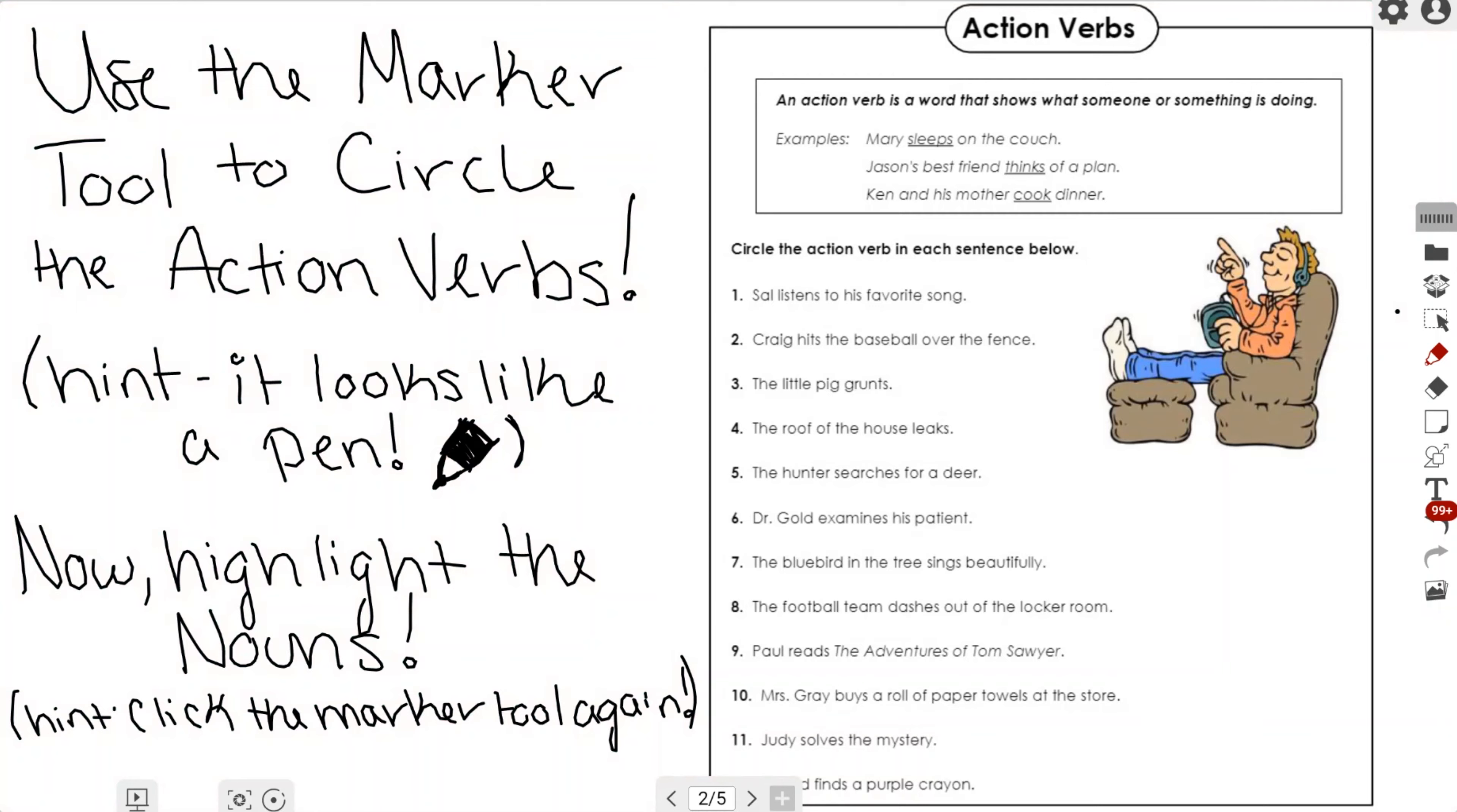The activity says use the marker tool to circle the action verbs. It looks like the pen, so that is the pen tool, also known as the marker tool. We're going to go ahead and circle the different action verbs in the actual PDF that we've imported. Just in case you need it, it looks just like the pen on the right hand side.